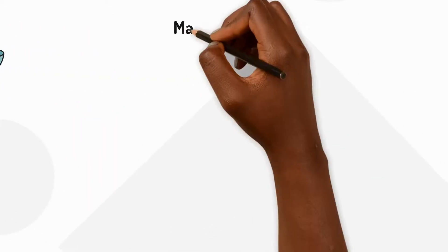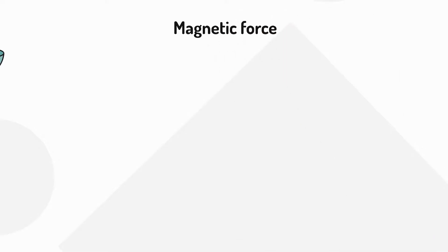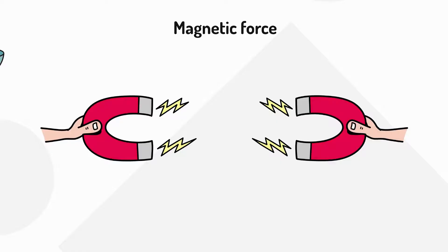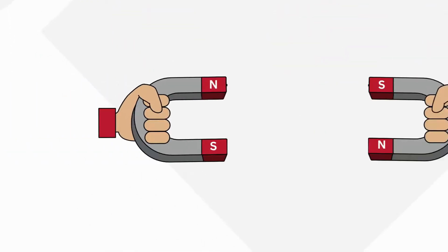The third non-contact force we're going to look at is magnetic force. When you hold two magnets near each other, they might snap together or push away without ever touching.